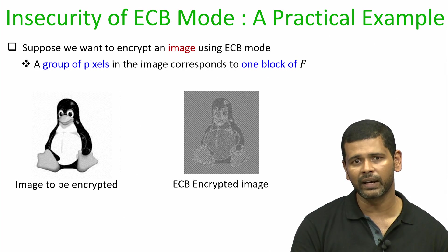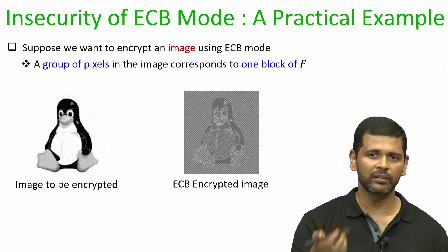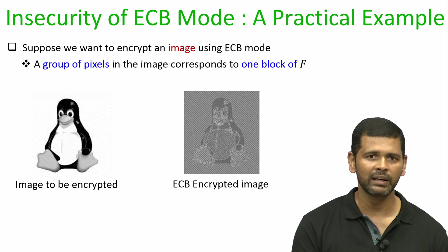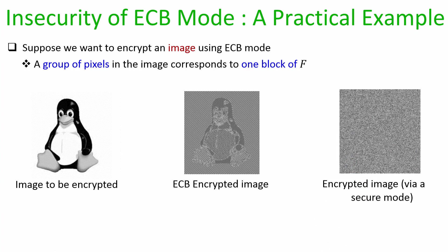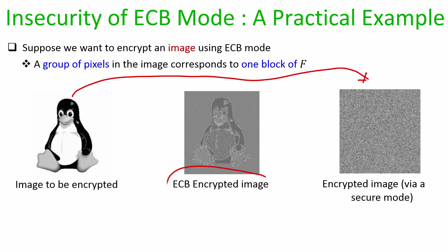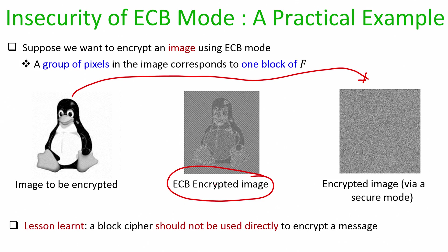If this encrypted image is sent over an insecure channel, an adversary can easily identify the underlying image from the pattern. Ideally, a secure mode should produce an encrypted image with absolutely no visible pattern, regardless of whether white or black pixels are encrypted. We will see how secure modes achieve this later, but ECB mode is completely useless.